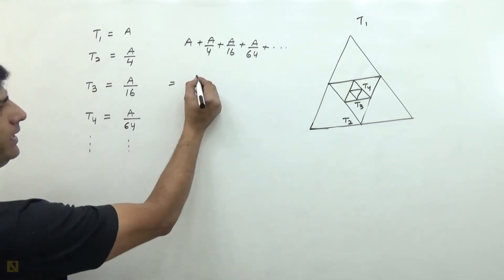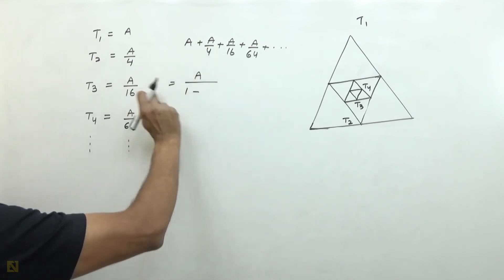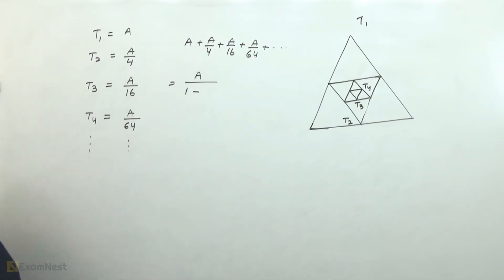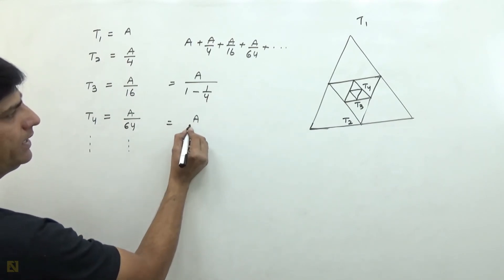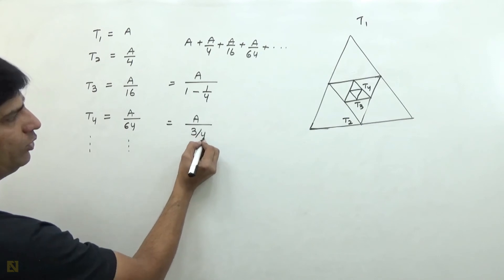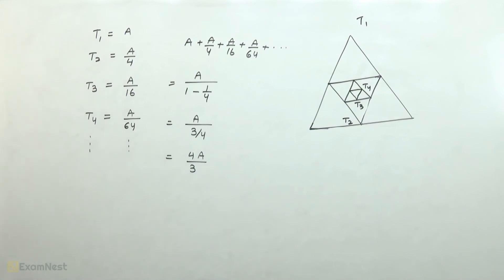First term is A, 1 minus common ratio. If we divide each term by the previous one, our answer will be 1 over 4. So this becomes A over three fourths or 4A over 3.